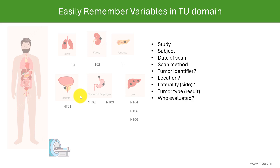We also need to know who evaluated the scans. In most cases, scans are evaluated by investigators at the site. In some cases, scans are also sent to a central reading facility where images from all different sites are evaluated centrally by radiologists or oncologists. So we need to capture whether the evaluator is the site investigator or a radiologist or oncologist at the central reading facility. Additionally, if the same scan is evaluated by multiple people, we also need to store an evaluator identifier.